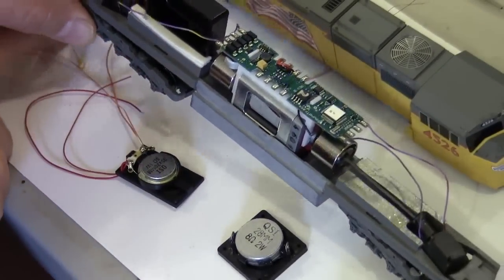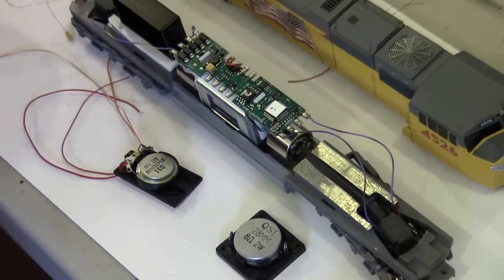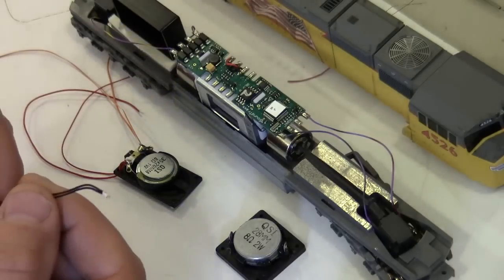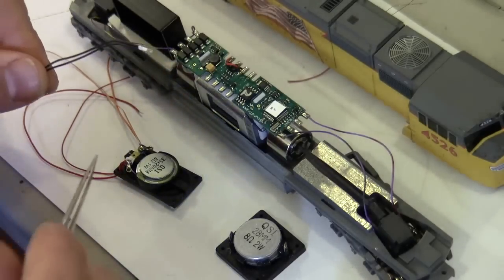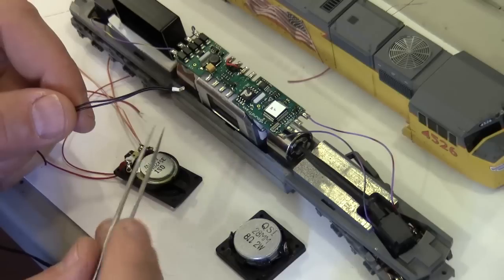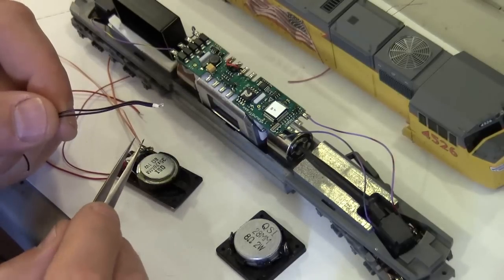The other part of doing these sound installs is once I have the model disassembled, I remove the factory 12-volt bulbs. As you can see here, pretty thick wiring, and these are prone to burning out.